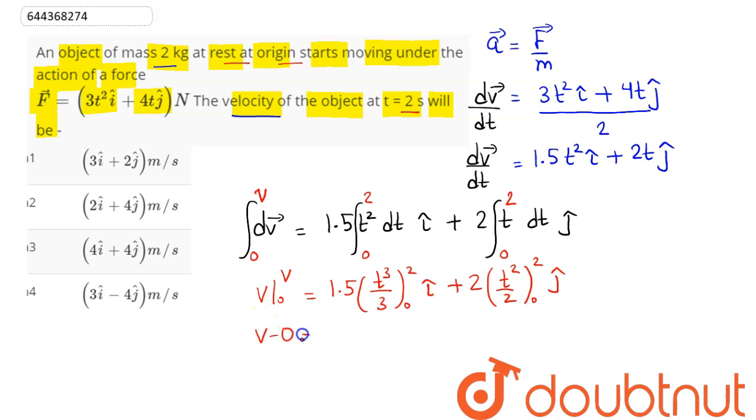Hence, this comes as v - 0 equals 0.5 with limits as 2³ - 0³ i cap plus, the 2 and 2 cancel out, 2² - 0² j cap.